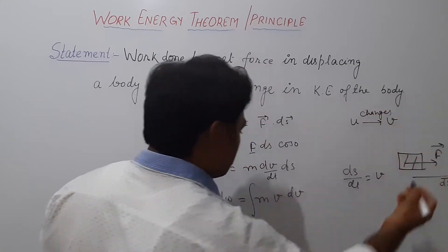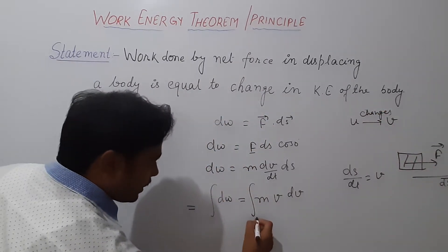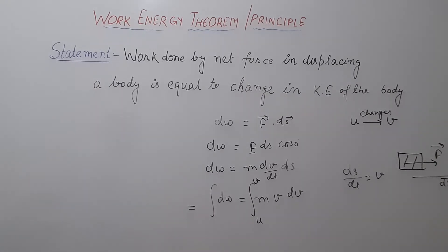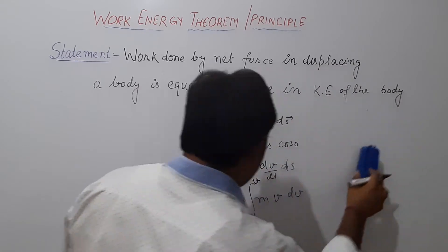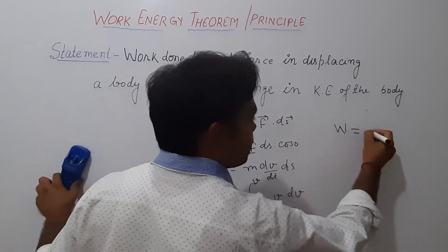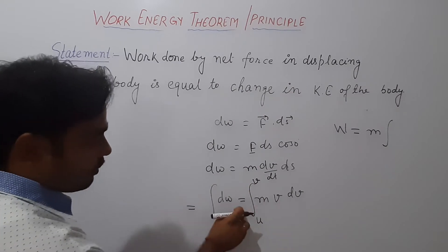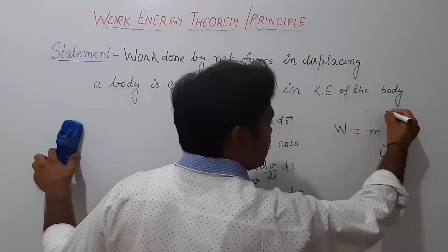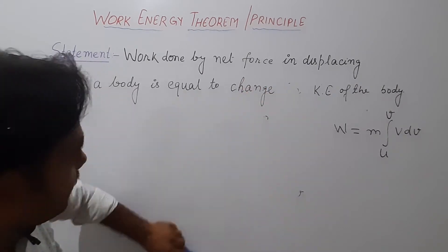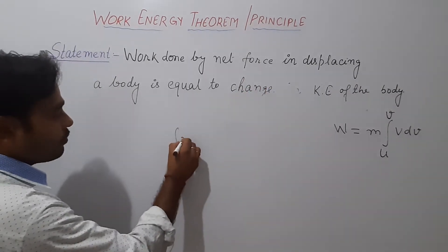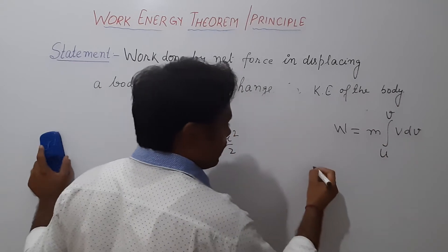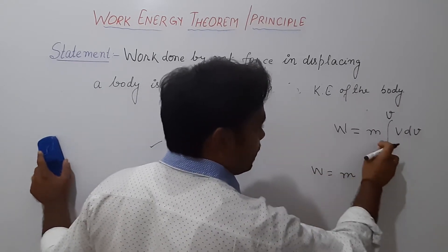So ds/dt equals velocity. Due to this force, the velocity changes from U to V. The total work can be calculated by integrating this result from U to V. The integration of dW, which is small work, gives total work W. This equals M — mass is constant and is unaffected by integration — integrated from U to V. And we have v dv remaining inside the integral.